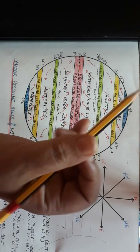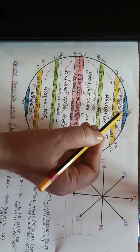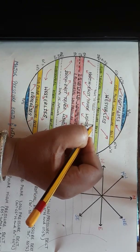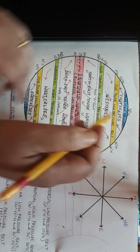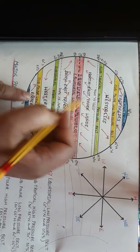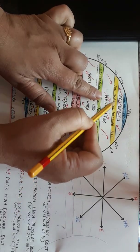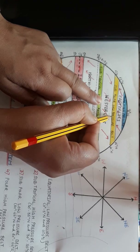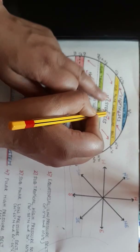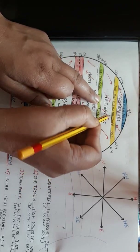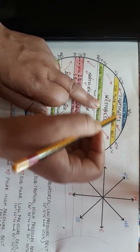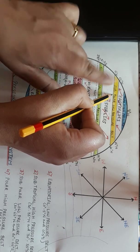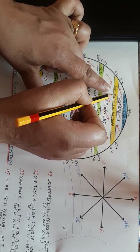Let me explain. From the polar high pressure belt, easterlies are coming towards this area, and from the subtropical high pressure belt, westerlies are moving towards this area. So two winds are converging here. The westerlies are warm winds — warm winds are light and rise up into the atmosphere. Easterlies are also reaching this area.